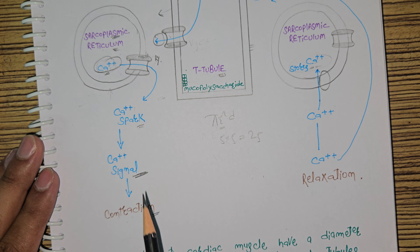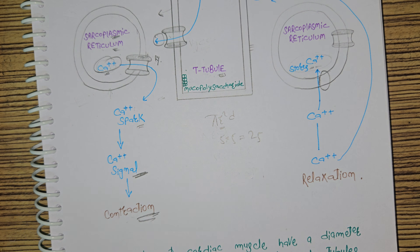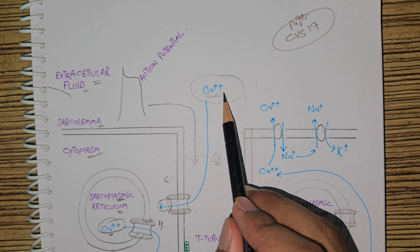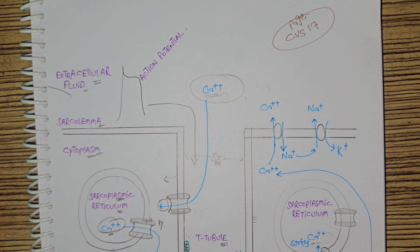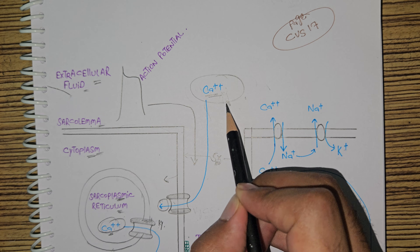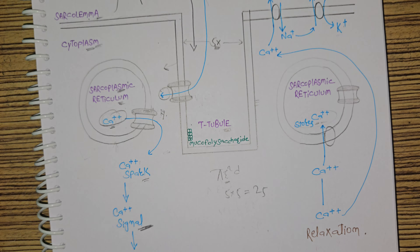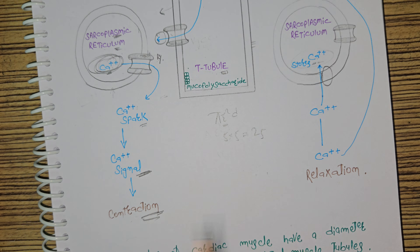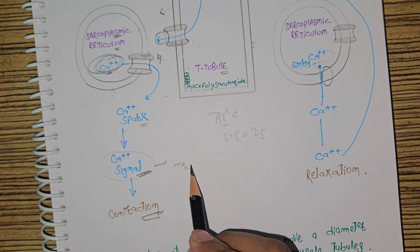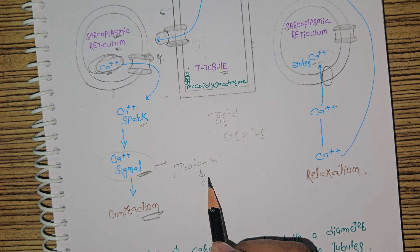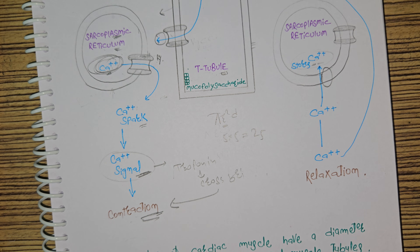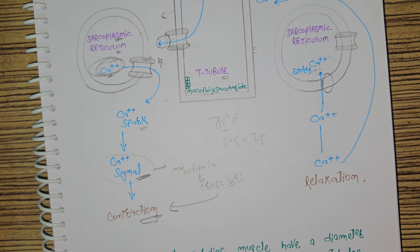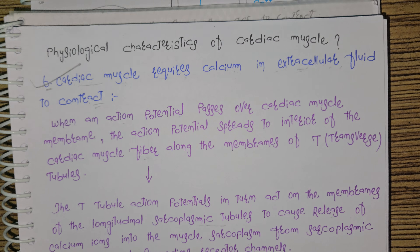This calcium from the extracellular fluid goes into the cytoplasm, and this calcium plus the calcium from the sarcoplasmic reticulum together signal the cell and result in the contraction of a cardiac muscle cell. This extracellular calcium is not required in a skeletal muscle cell — skeletal muscle cell contraction only depends on calcium from the sarcoplasmic reticulum. The calcium binds with troponin, resulting in cross-bridge formation and contraction.